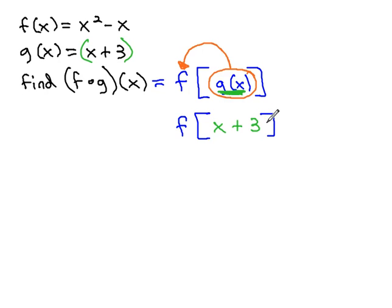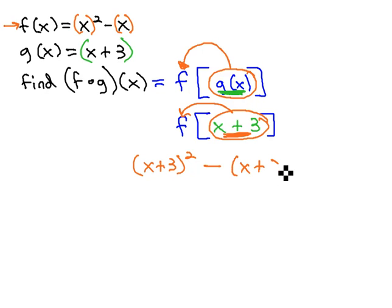What we're going to do is take this x plus 3 and plug it into the f function. In the f function, both of these x's is going to be replaced with the entire x plus 3. So instead of x squared, it's now x plus 3 squared, minus instead of x, it's now x plus 3.